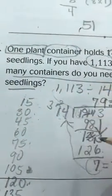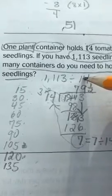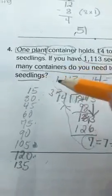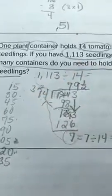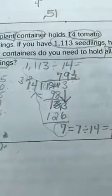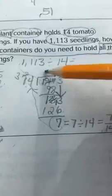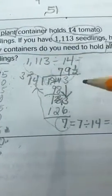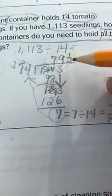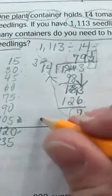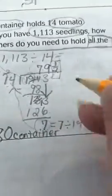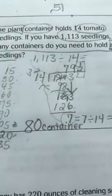So when I divided the total number of seedlings by 14 per container, I got 79 and a half. But what do I need to do with it? The question says: how many containers do you need to hold all the seedlings? Do I need 79, 79 and a half, or 80? Since I want to hold all the seeds, I need to buy one extra container — I can't buy half a container. So I round up to 80. I have to buy that extra container so that all my seedlings are held.